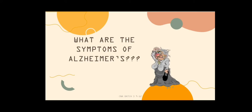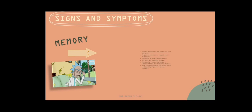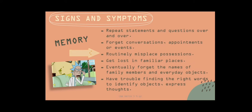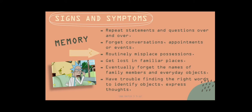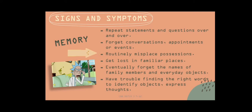What are the symptoms of Alzheimer's? Signs and symptoms include: repeat statements and questions over and over, forget conversations, appointments, or events, routinely misplace possessions, get lost in familiar places, eventually forget the names of family members and everyday objects, and have trouble finding the right words to identify objects or express thoughts.